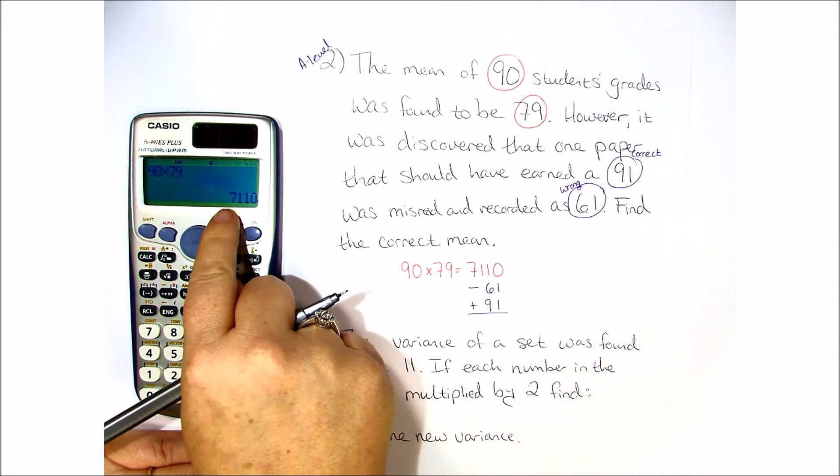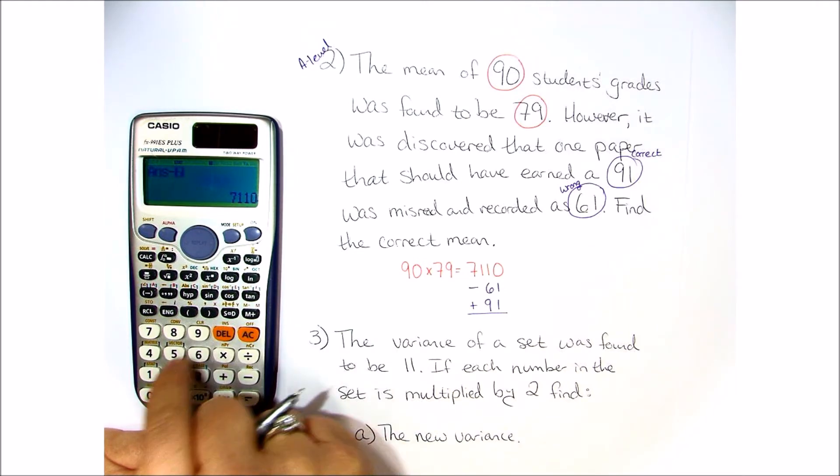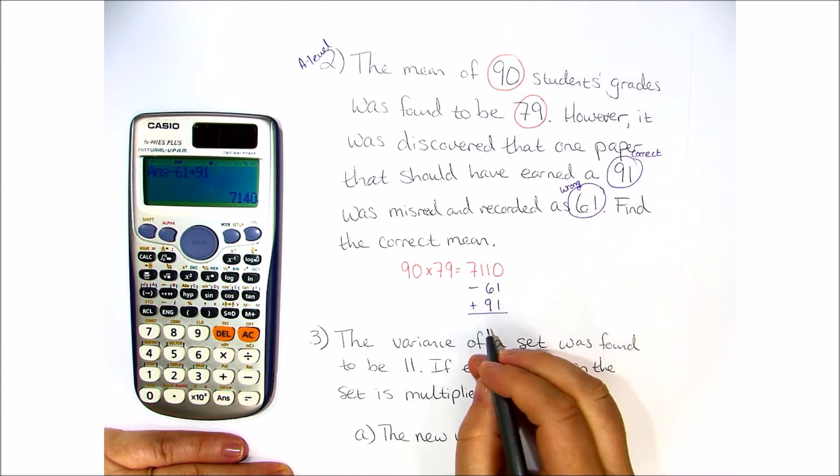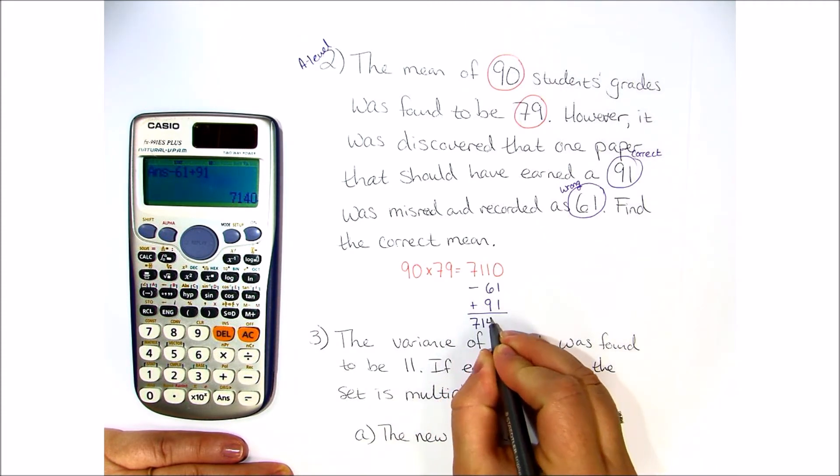But we are going to go ahead and do that. 7,110 minus 61 plus 91, and that gives us a new average of 7,140.